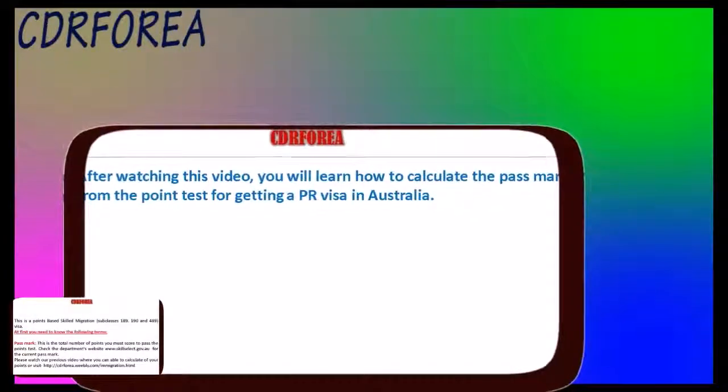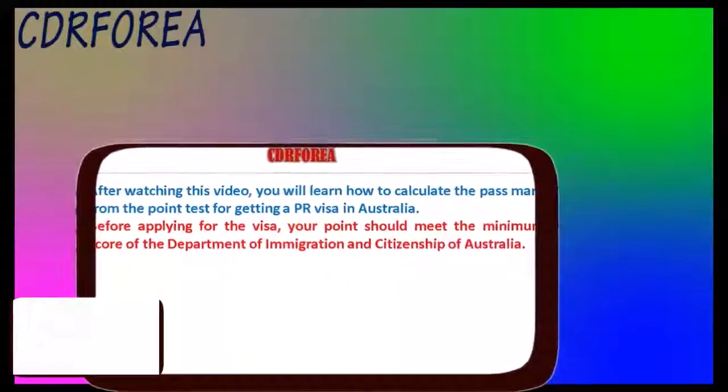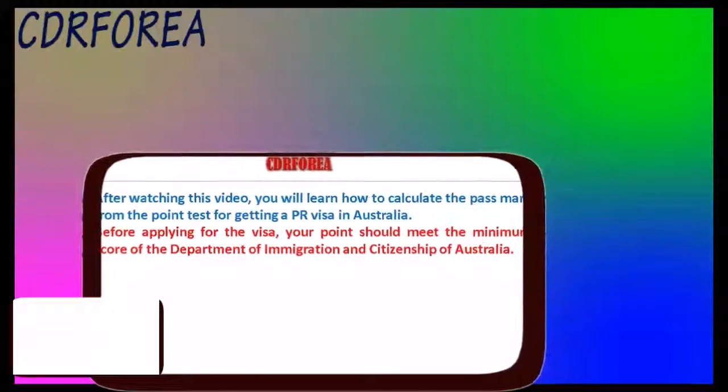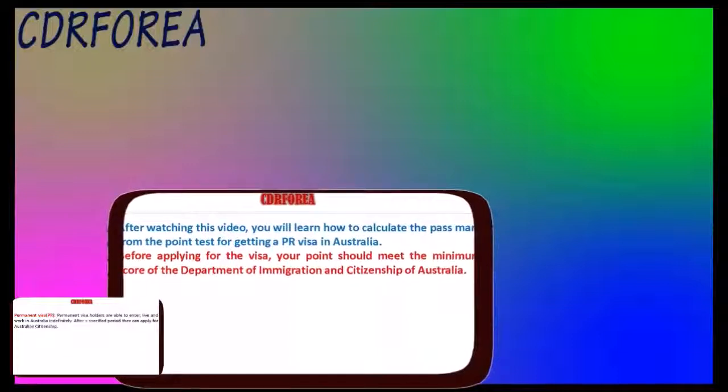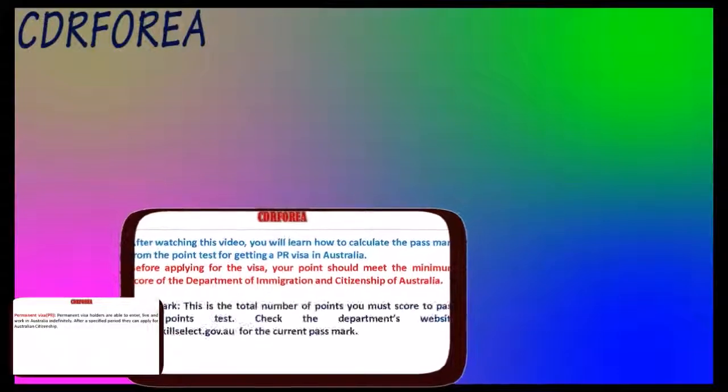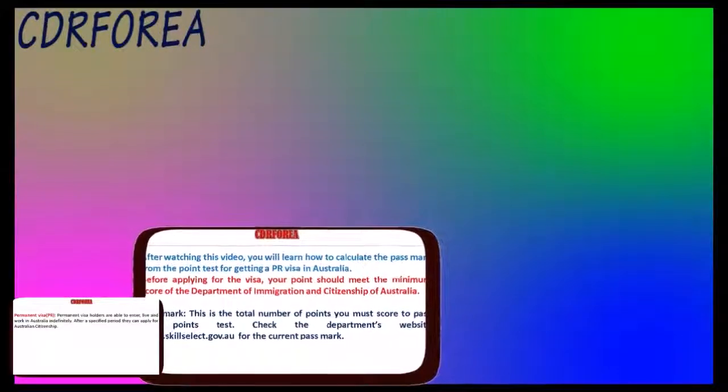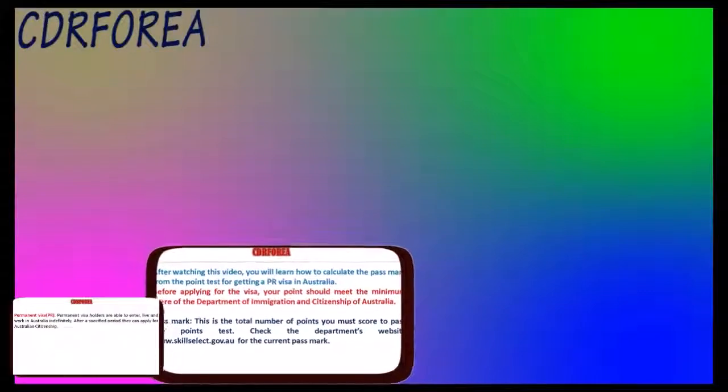After watching this video, you will learn how to calculate the pass mark from the point test for getting a PR visa in Australia. Before applying for the visa, your points should meet the minimum score of the Department of Immigration and Citizenship of Australia. Do you want to know how to write ACPD and CV? For details, please click on the video.